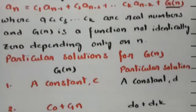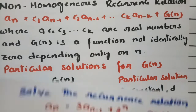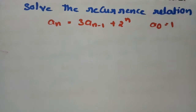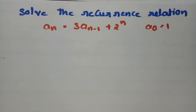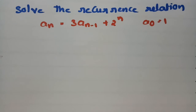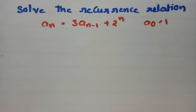Using these steps, I am going to solve one problem: find the solution to the recurrence relation a_n = 3·a_{n-1} + 2n·2^n, where a_0 = 1.